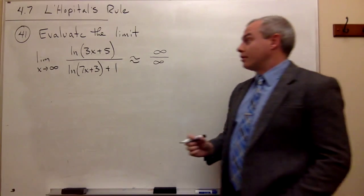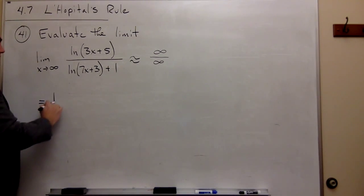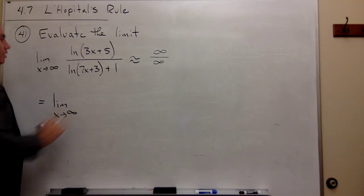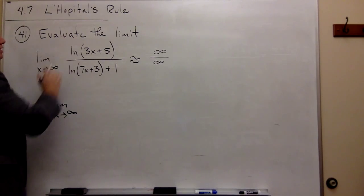So let's go ahead and do so. So I can say that this is equal to, we rewrite the limit, limit as x goes to infinity, of the derivative of the top. Now, the derivative of the top, we know how to take the derivatives of ln of something.